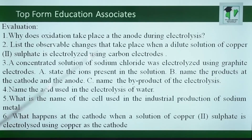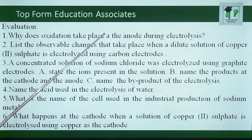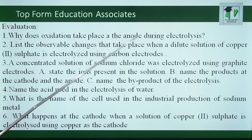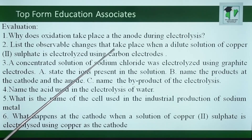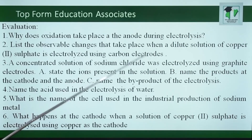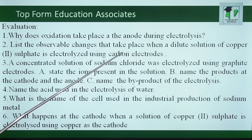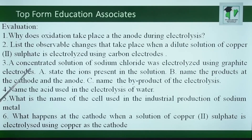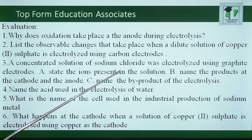Let us evaluate ourselves to know if we have actually learnt anything during this lesson. Question 1: Why does oxidation take place at the anode during electrolysis? This is because the anode is electron-poor, and it will lose electrons. Question 2: List the observable changes that take place when a dilute solution of copper sulfate is electrolyzed using carbon electrodes. Carbon electrodes are inert electrodes, so copper ions will be deposited at the cathode, while oxygen gas will be liberated at the anode. Question 3: A concentrated solution of sodium chloride was electrolyzed using graphite electrodes. State the ions present in the solution. The ions present are sodium ion, chloride ion, hydrogen ion, and hydroxyl ion.